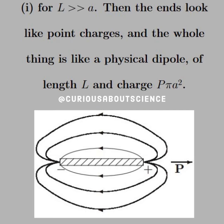For case one, where L is much, much greater than A, the endpoints look like point charges, and the whole thing looks like a physical dipole of length L and charge P times pi A squared.